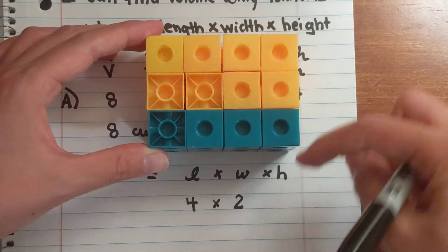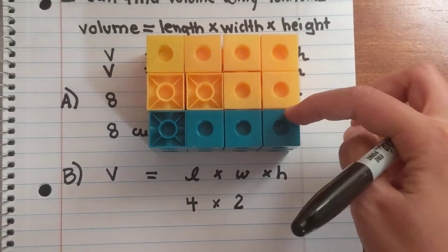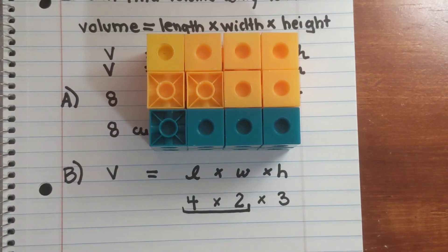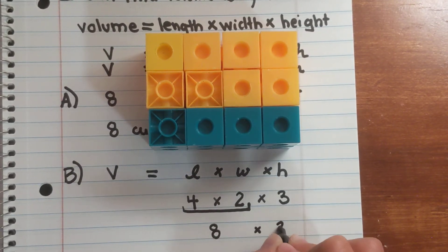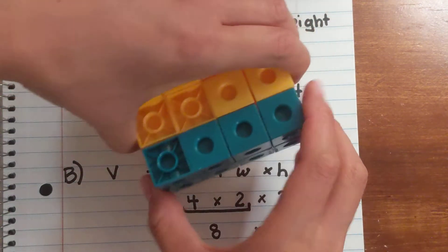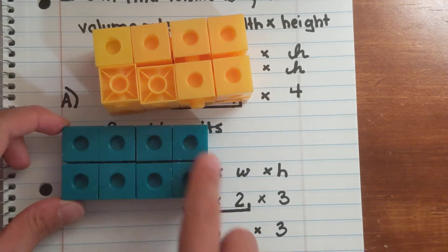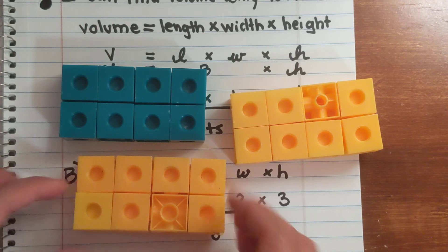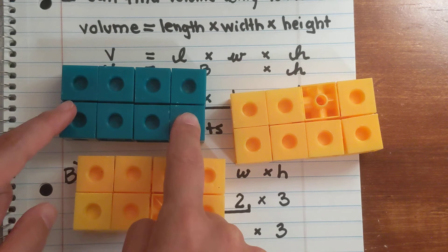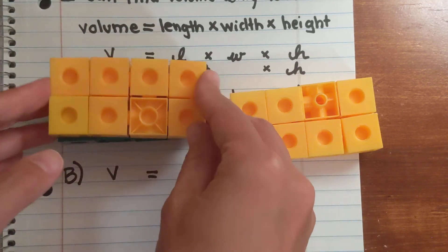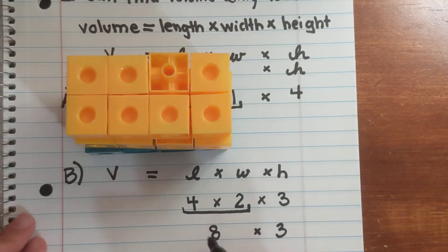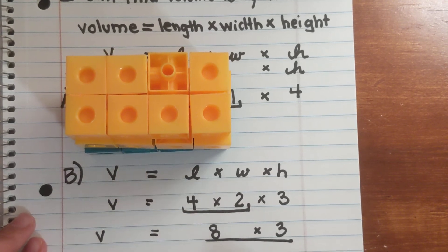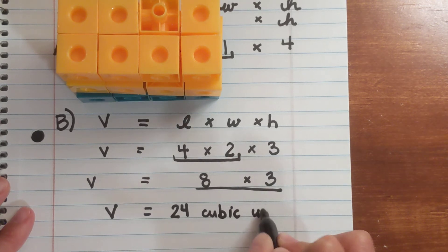The last measurement is height. What is the height of this 3D figure? One, two, three — the height is three. Now let's use the shortcut volume: combine the length and the width first, and that gives us eight. So the shortcut is base times height. The base is eight, and I have three layers — three groups of eight. If you know the base, which is length times width equals eight cubic units, all you have to do is multiply by the height — the number of layers. Eight times three gives us 24 cubic units.